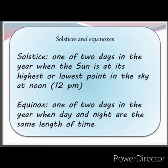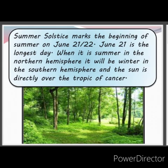Solstice: one of two days in the year when the Sun is at its highest or lowest point in the sky at noon. Equinox: one of two days in the year when day and night are the same length of time. Summer solstice marks the beginning of summer on June 21st and 22nd. June 21st is the longest day. When it is summer in the Northern Hemisphere, it is winter in the Southern Hemisphere, and the Sun is directly over the Tropic of Cancer.